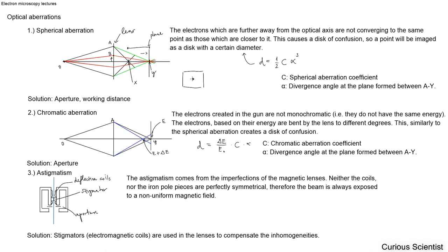That disk has a certain diameter, which can be calculated by using the spherical aberration coefficient of your lens or microscope. It also depends on the divergence angle at the plane formed between A and Y — basically the angle between this line and the optical axis.